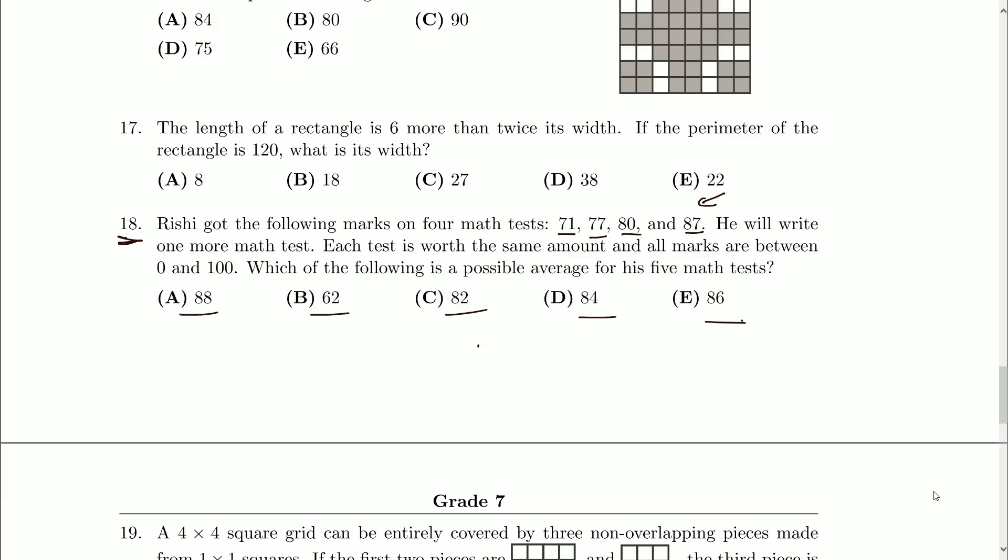So for example, I would take 88. I would multiply it by 5 to get me the total, to undo sort of the averaging process to get me 440. That's the total of all of Rishi's marks. And then subtract off the 71, subtract off the 77, subtract off the 80, subtract off the 87. That would leave me with 125. So he would need to get 125 on his remaining test. And that's impossible.